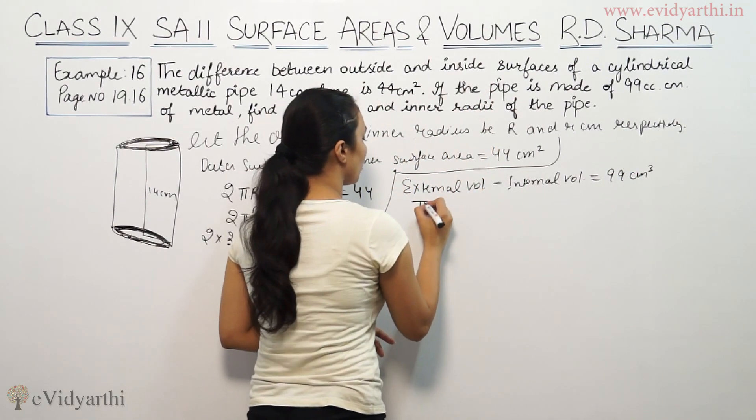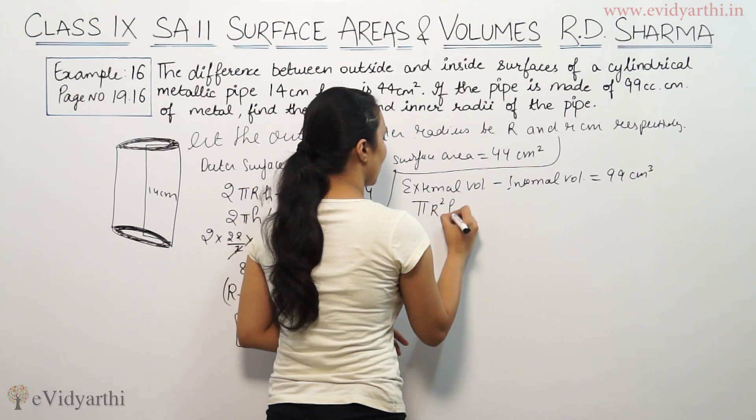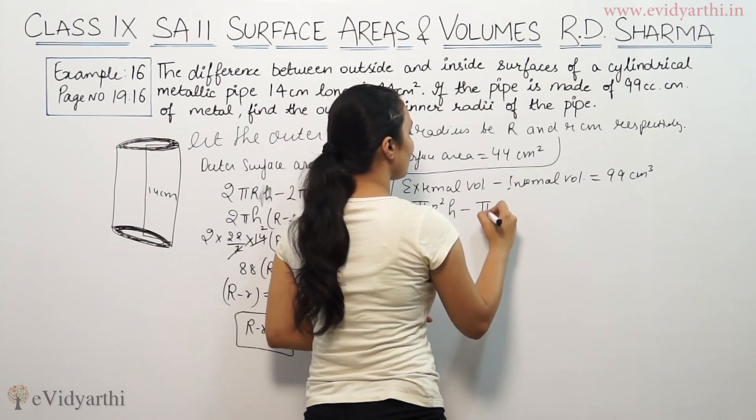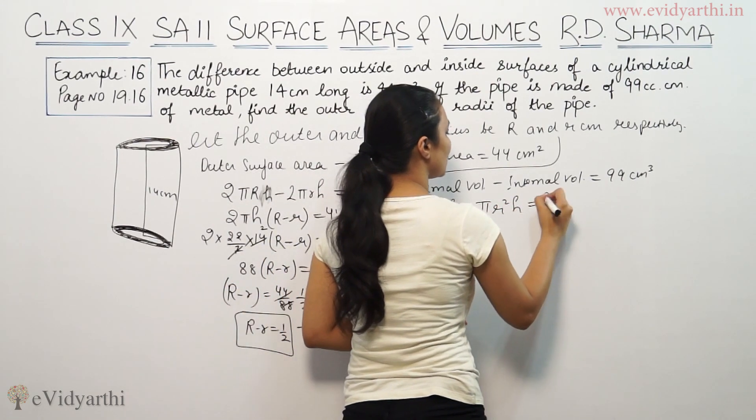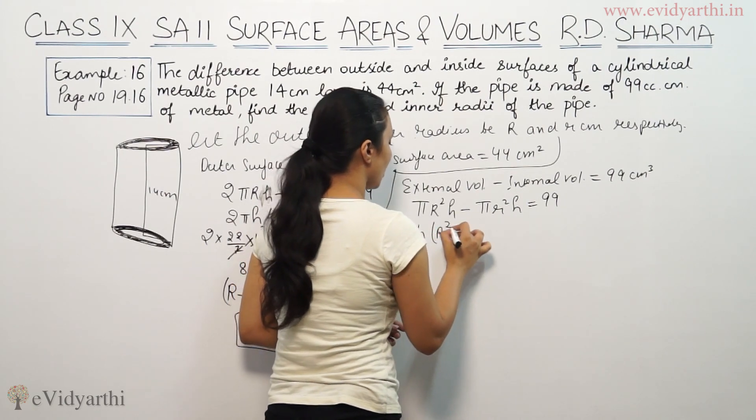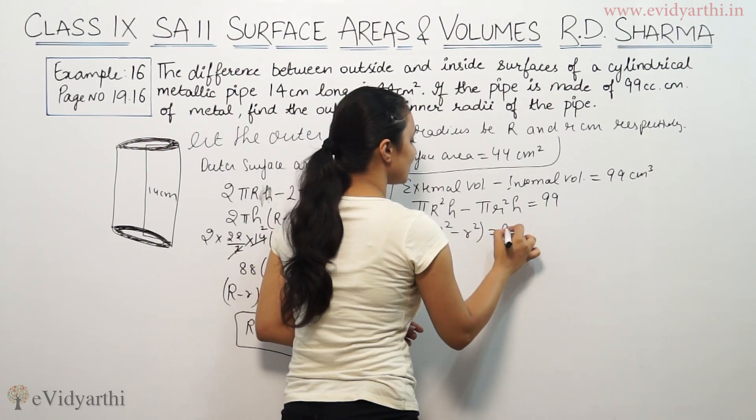So external volume - the volume formula is πr²h. So πh is common.